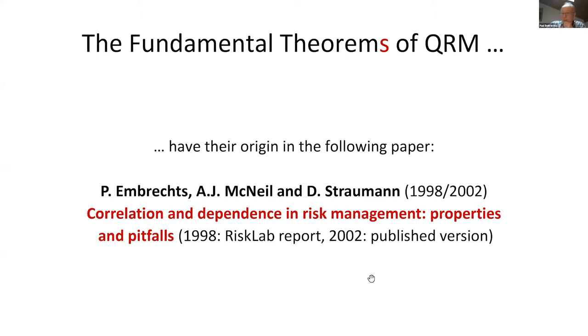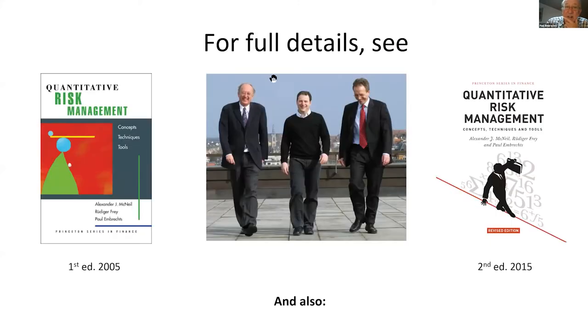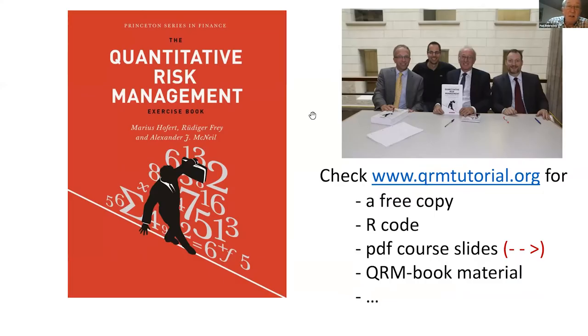We never really published it, although it was published in the end in the proceedings of a Newton Institute meeting. But that's a paper where we really tried to point out to the wider world, especially in finance and economics, insurance, in many application fields, that there is an issue with understanding correlation. Later on we incorporated that in a book we wrote on quantitative risk management, the early version in 2005, the second edition in 2015.